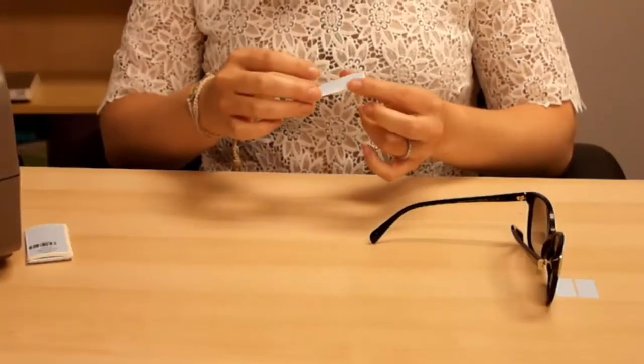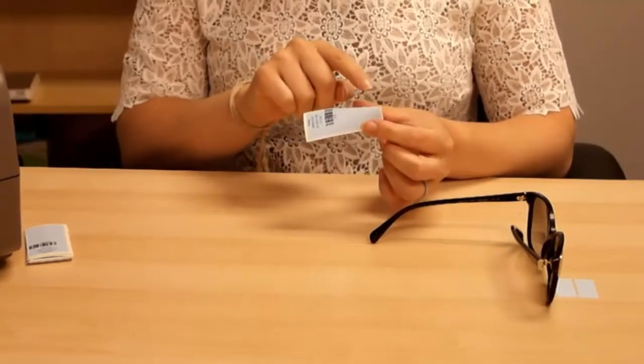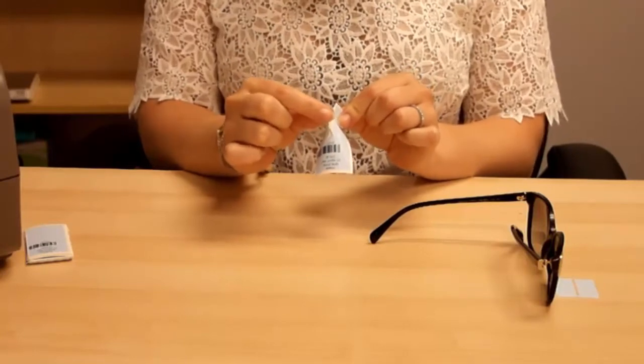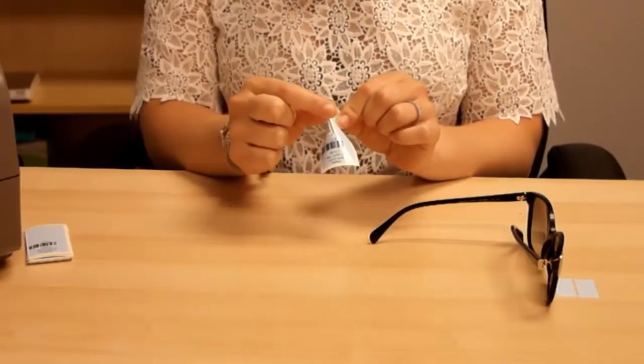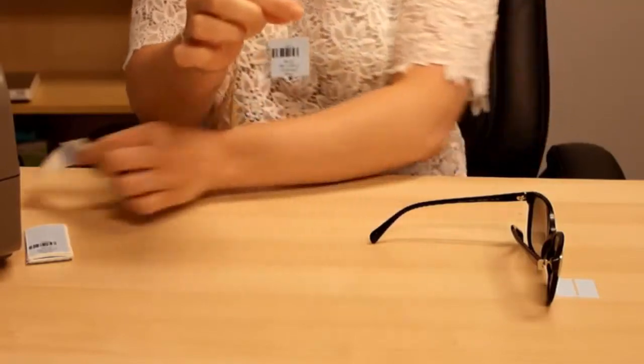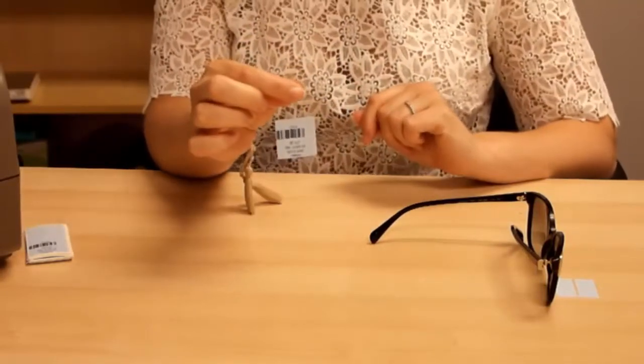Next, pinch and fold the loop side of the label slightly so that the loop end sticks up and is easier to grab. Next, peel the label off of the paper backing by gripping the non-adhesive loop and pulling up. And don't be afraid to pull too hard, these labels will not tear.